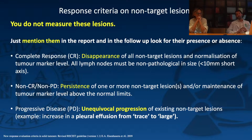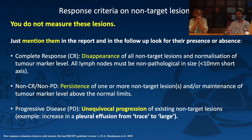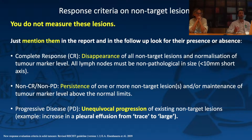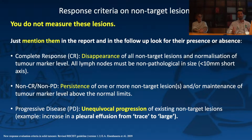For non-target lesions: if you have more lesions beyond your 5 target lesions, you designate them as non-target. You do not measure them — you mention their presence or absence. Complete response requires the disappearance of all non-target lesions. For progressive disease, you can declare unequivocal progression; for example, if pleural effusion grows from a trace to a large effusion and cytological exam confirms malignant cells, that is unequivocal progression.